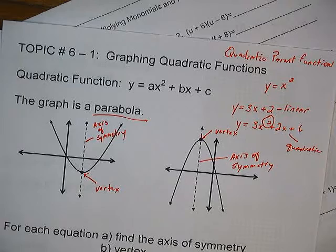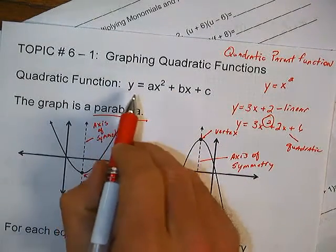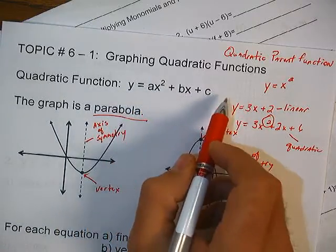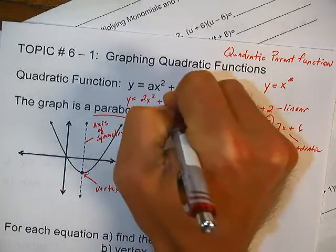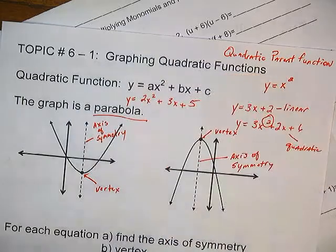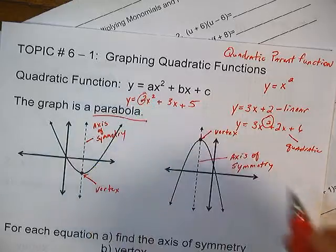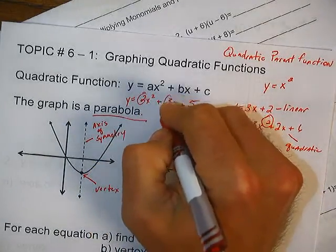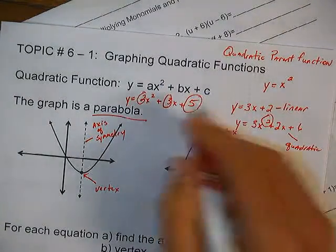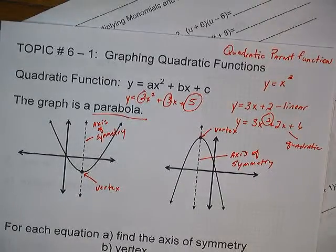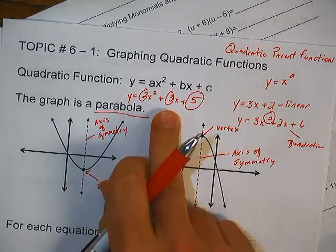If you look at the standard form of a quadratic function, it's y equals ax squared plus bx plus c. For instance, y equals 2x squared plus 3x plus 5. The a would be whatever's in front of the x squared, the b would be whatever's in front of the x, and the c would be the constant — the number that's out there by itself.